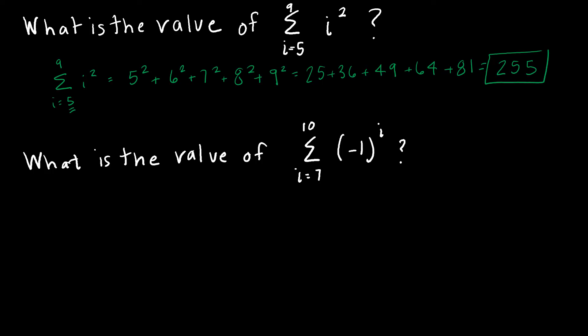Same thing for the second question. This says the summation as i goes from 7 to 10 of negative 1 to the i. So now i is the exponent.